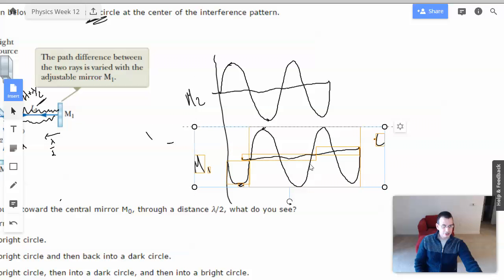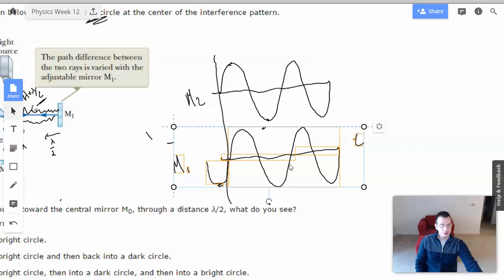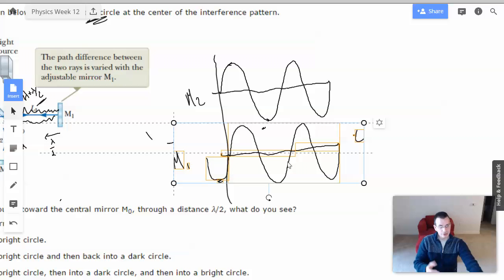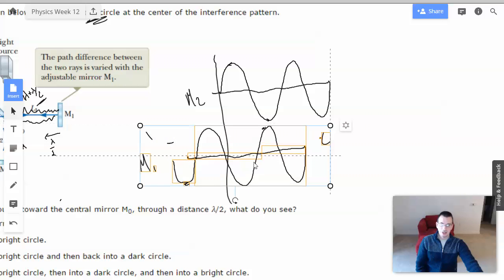So here you have a dark spot because they're interfering. You're going to move to here until you have a light spot where they both constructively interfere. It gets back to the original wave before they split off. Then you're going to continue moving it there, and you're then going to get another dark spot. So it's going to go from dark to light to dark again.